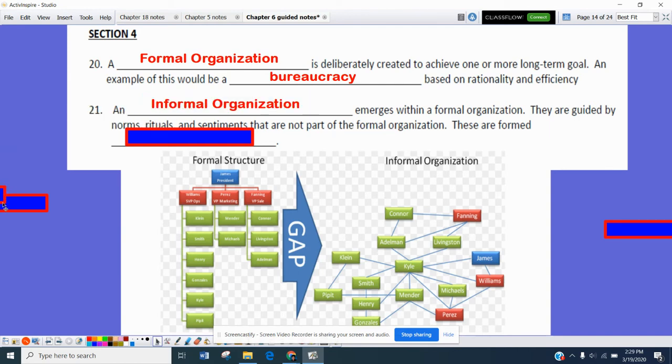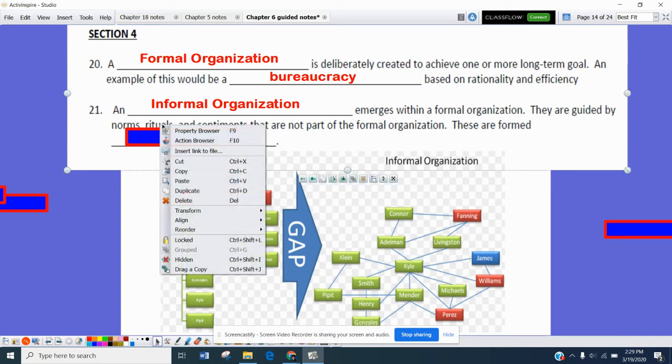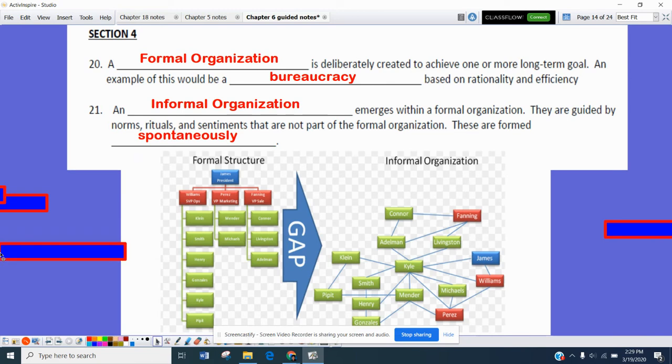Informal organization emerges within formal organizations and they're usually guided by norms, rituals, and sentiments. They're not part of the formal organization. These, for the most part, form spontaneously. If you look at the graphic below here,